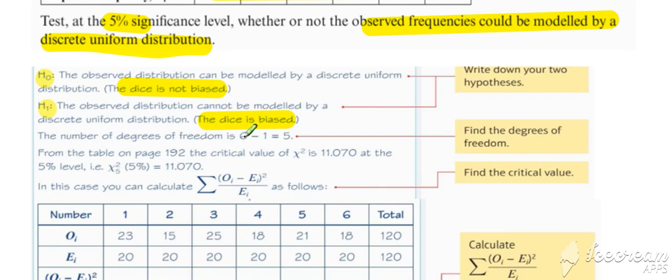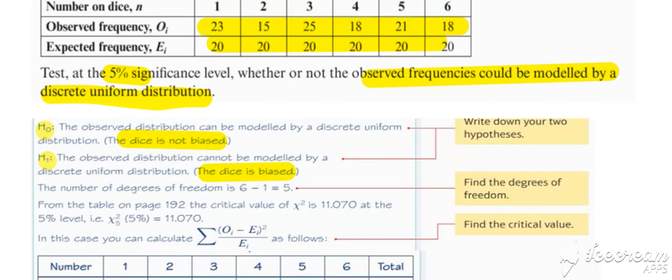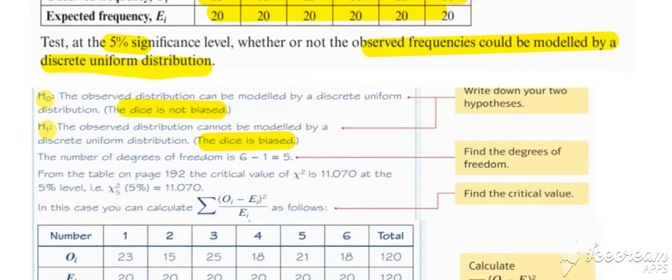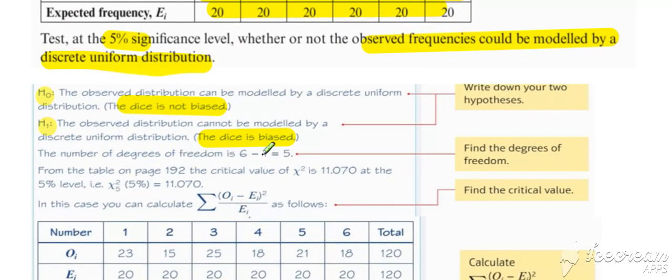Degrees of freedom is equal to your number of cells, 6, take away your number of constraints, 1. So 6 take 1, degrees of freedom is 5. Critical region, so we've already dealt with this example earlier, critical region 11.07.